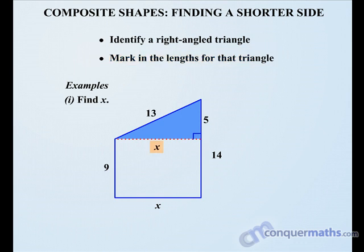Trying to find X, it's one of the shorter sides this time. So we start: X² equals—the hypotenuse is 13, so we write 13². And the other shorter side is 5, so we subtract 5². So X² equals 13² minus 5², which is 144.